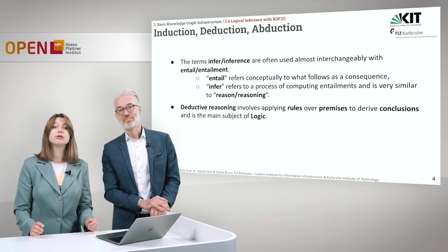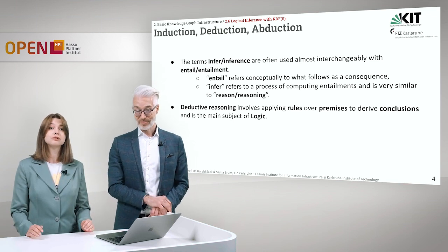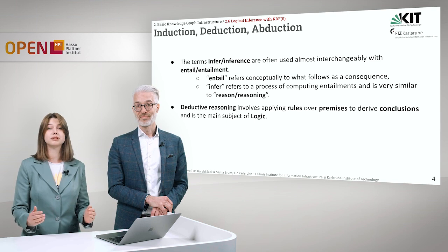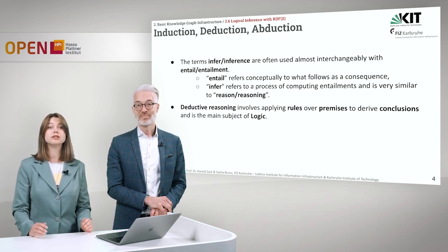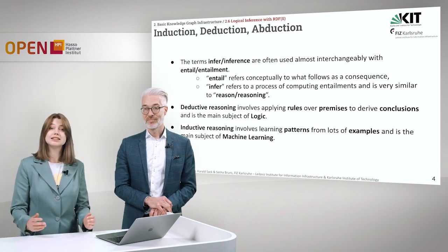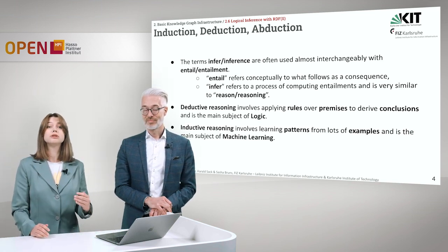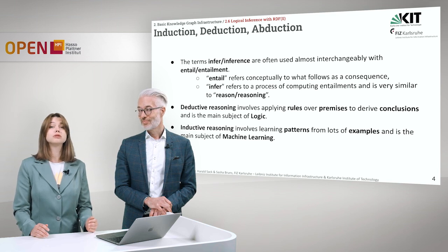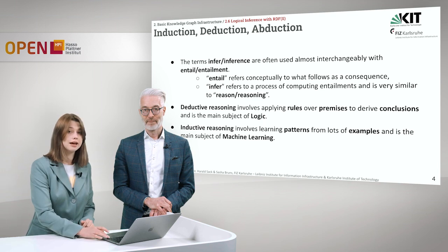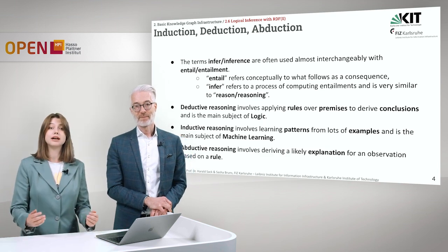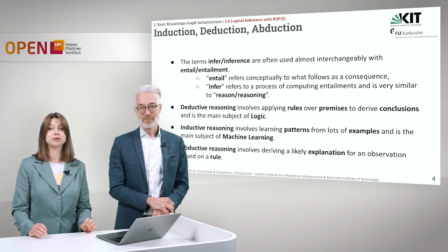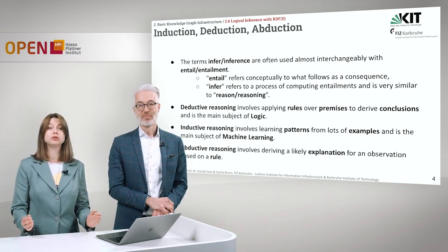There are three types of reasoning. First of all, there is deductive reasoning, which involves applying rules over premises to derive conclusions, and this kind of reasoning is the main subject of logic. There is also inductive reasoning, which involves learning patterns from lots of examples and is the main subject of machine learning. And the last one is abductive reasoning, which involves deriving a likely explanation for an observation when based on a rule.